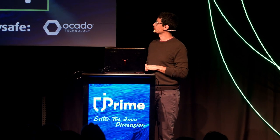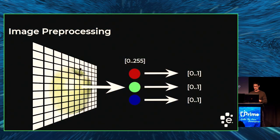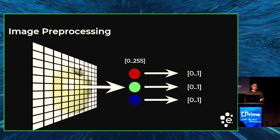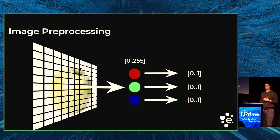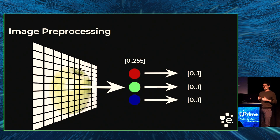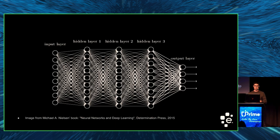First we need to figure out how to preprocess the image — a step we do before feeding it to the ML model. For each pixel, we take the red, green, and blue values. Because these are single bytes between 0 and 255, we need to convert them to floating point values between 0 and 1. When all this is done, we build the so-called tensor — a huge matrix of all these numbers — and feed it to the input layer of the neural network.